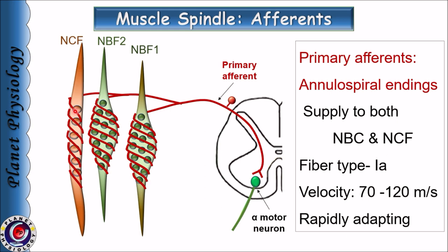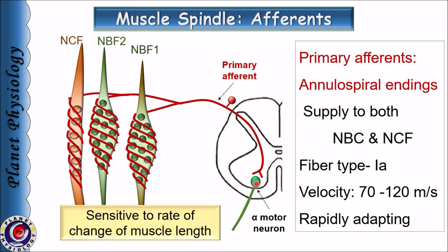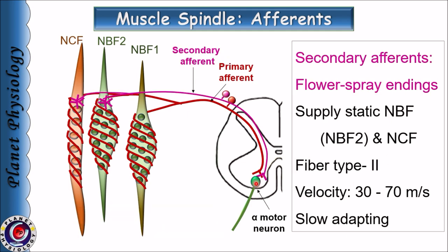These afferents synapse directly with alpha motor neurons in the spinal cord that innervate extrafusal fibers of the same muscle. As shown in this picture, the annulospiral endings transmit their signals via the primary afferent, and the primary afferent synapses with the alpha motor neuron.